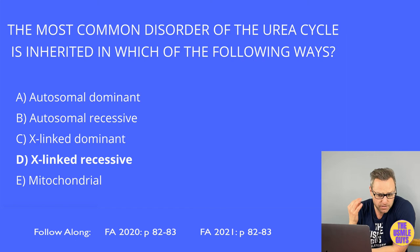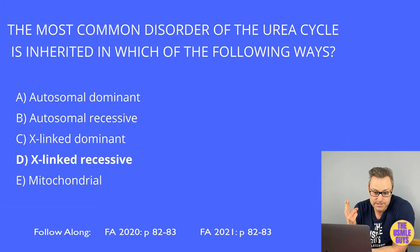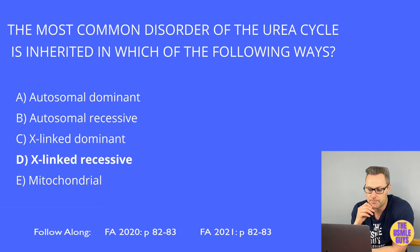Due to the increased levels of orotic acid that build up when this enzyme is deficient, you'll find increased orotic acid in the blood and urine, as well as a decrease in BUN and symptoms of hyperammonemia. One way to differentiate this from orotic aciduria is that OTC deficiency does not cause megaloblastic anemia, while orotic aciduria does.